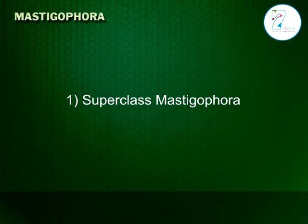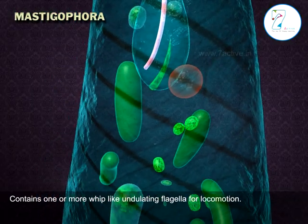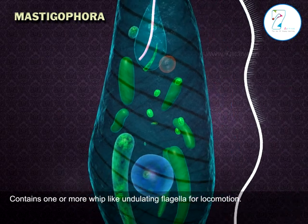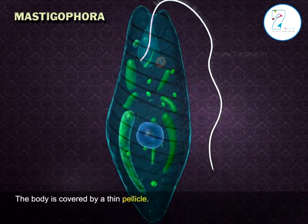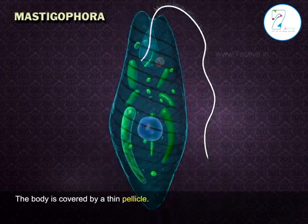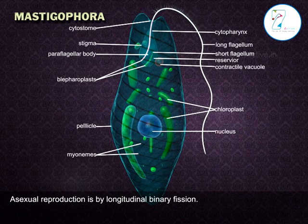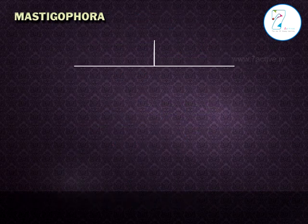Superclass Mastigophora contains one or more whip-like undulating flagella for locomotion. The body is covered by a thin pellicle. Asexual reproduction is by longitudinal binary fission. It is divided into two classes.